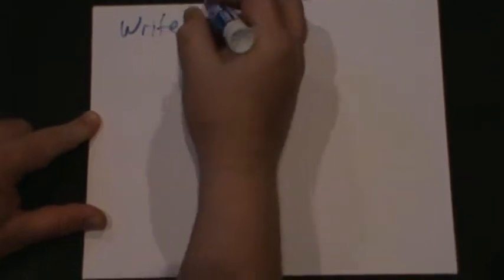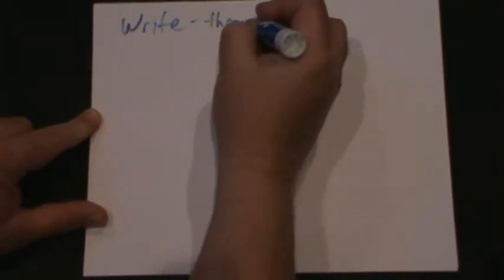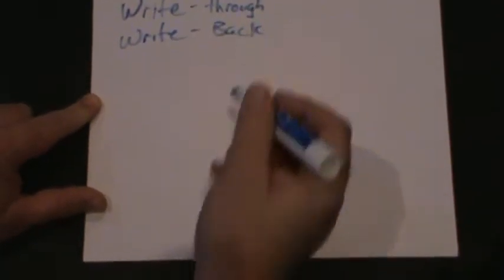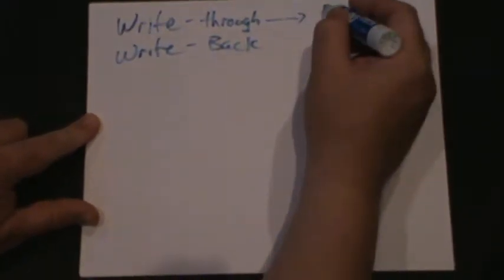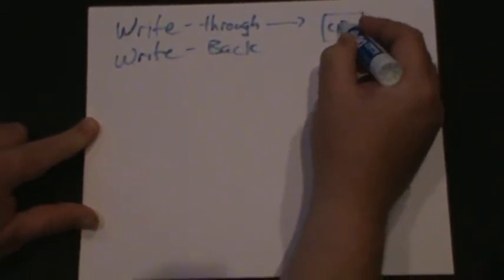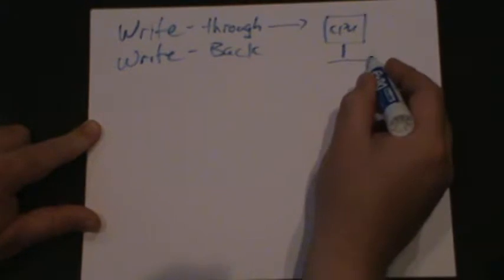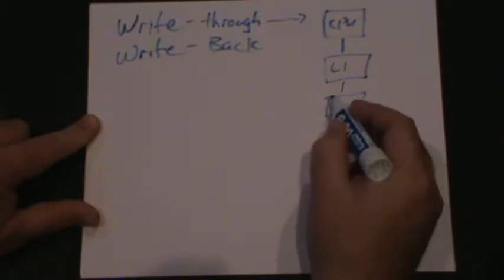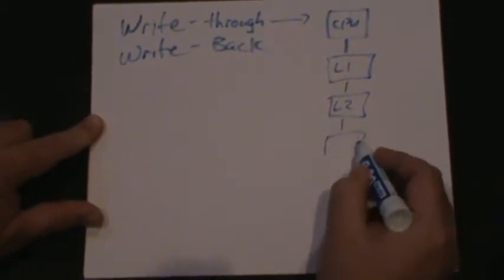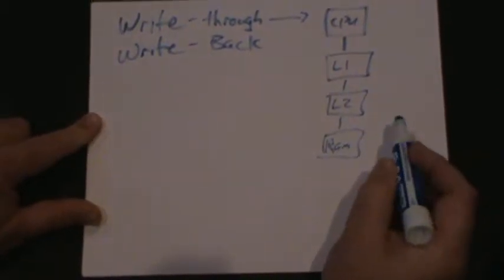One that we're going to discuss the difference through is what's called write-through versus write-back cache. Okay, so write-through versus write-back. Now the idea of this write-through cache, which is our first one, imagine I've got my CPU here and that CPU has several layers of cache going on. It's got a level one cache and we're just concerned right now with level two cache, and then that goes down to RAM.